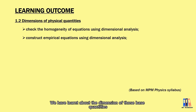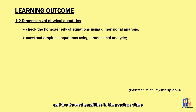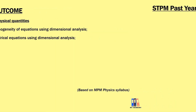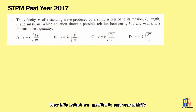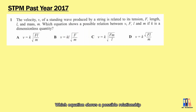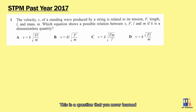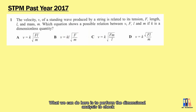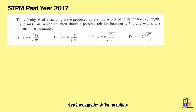We have learned about the dimensions of base quantities and derived quantities in the previous video. Now let us look at one question from past year 2017. The velocity v of a standing wave produced by a string is related to its tension f, length l, and mass m. Which equation shows a possible relationship between those variables if k is a dimensionless quantity? This is a question where you never learned about the formula before, so what we can do is perform dimensional analysis to check the homogeneity of the equations and determine the possible formulas.